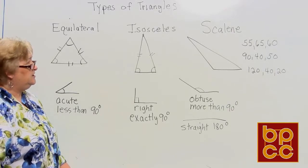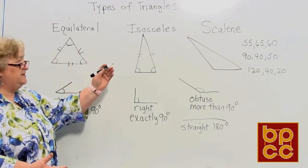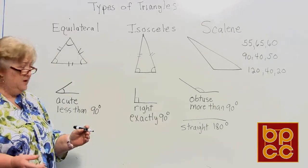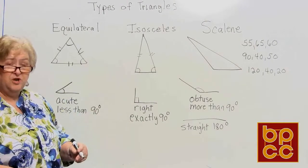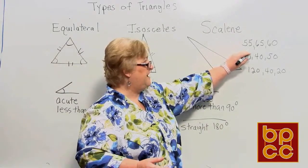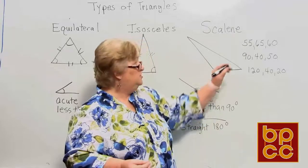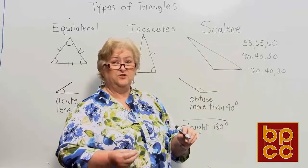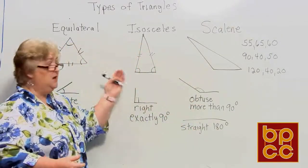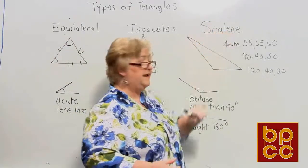In addition to calling triangles equilateral, isosceles, and scalene, we can also identify them by the type of angles they have. The first example is 55, 65, and 60 degrees, which adds up to 180. Since all the angle sizes are less than 90, we can call this an acute triangle.